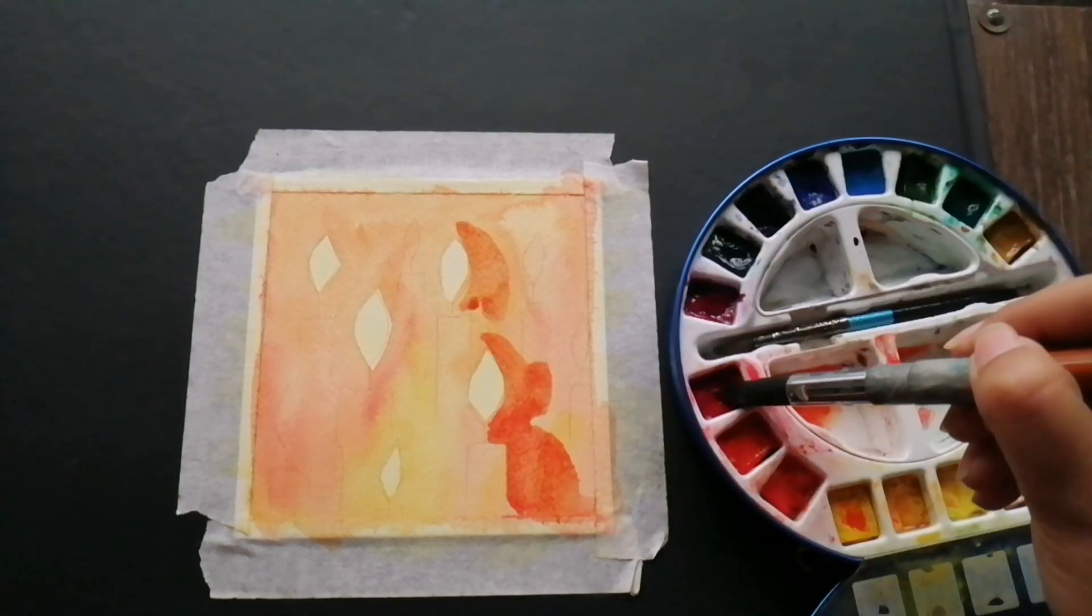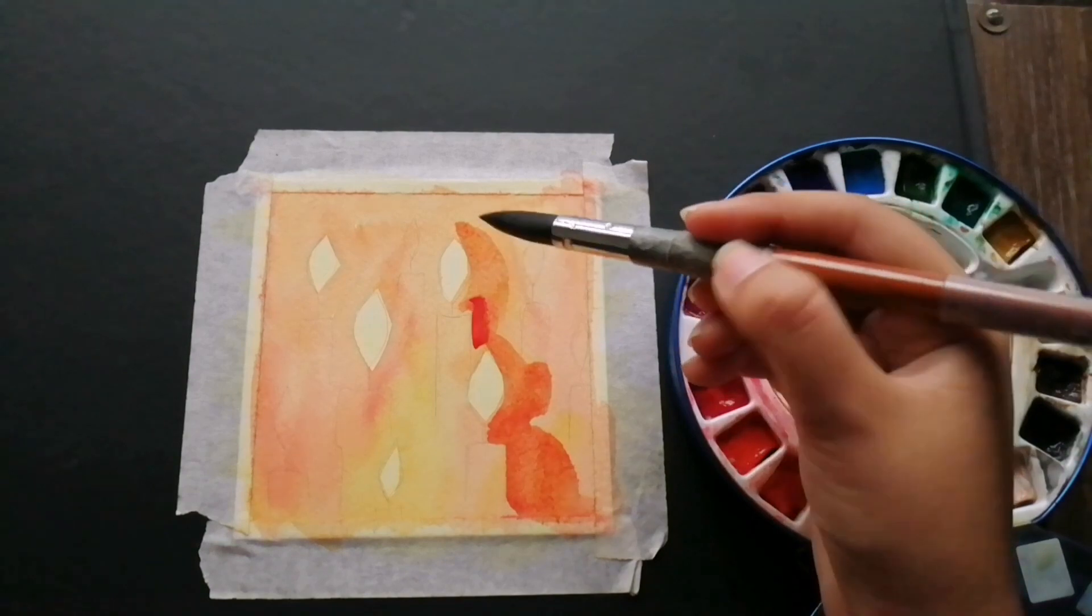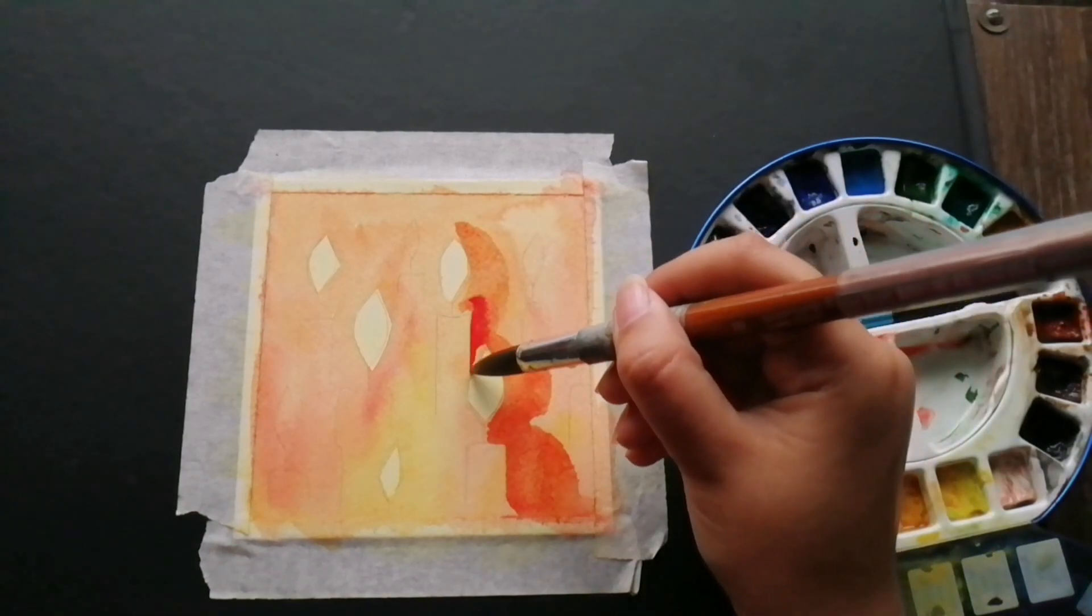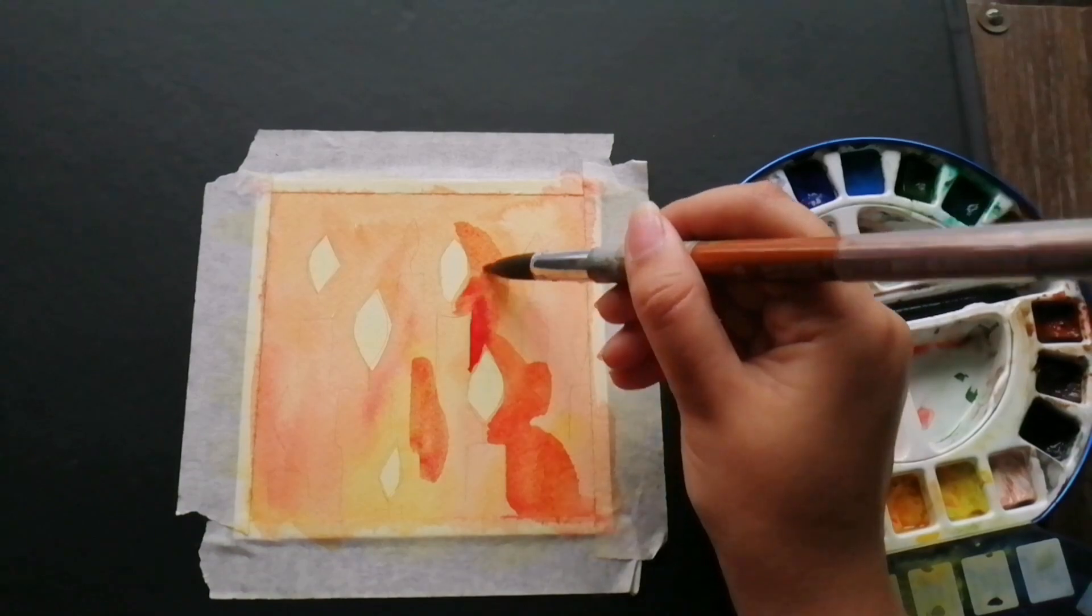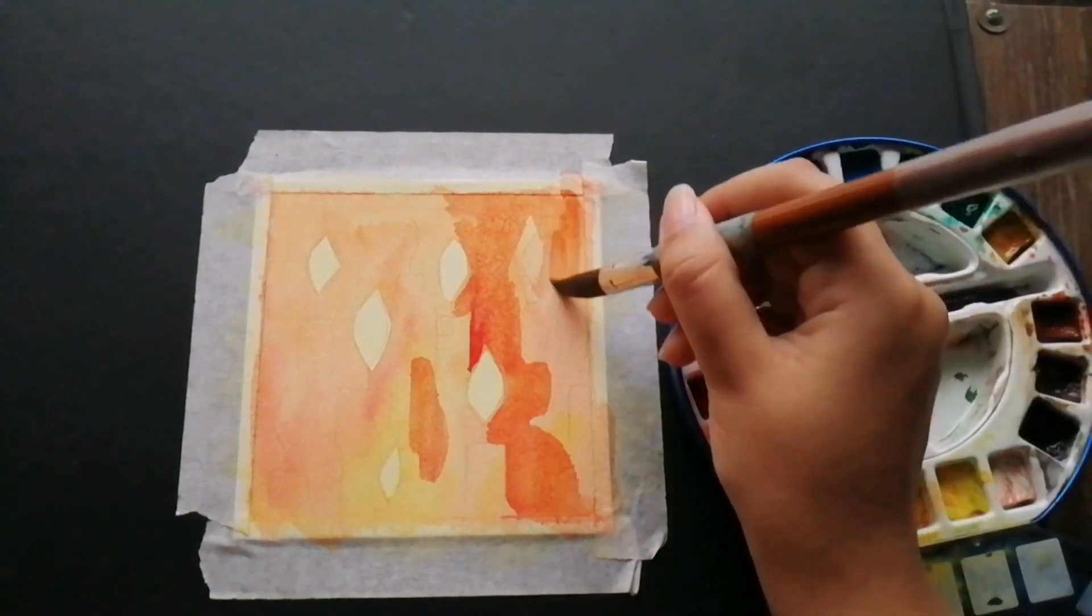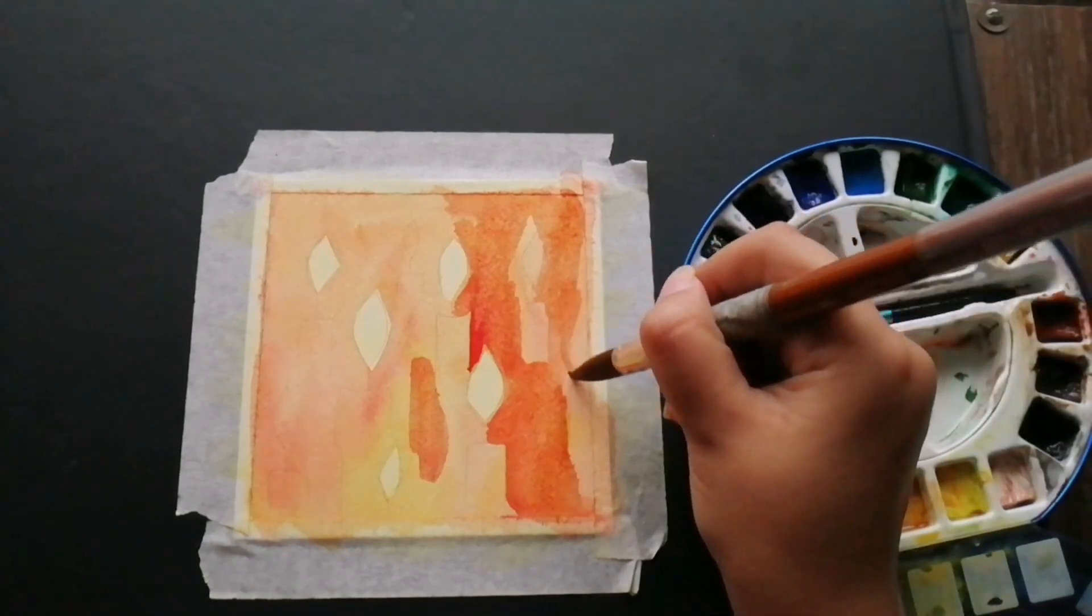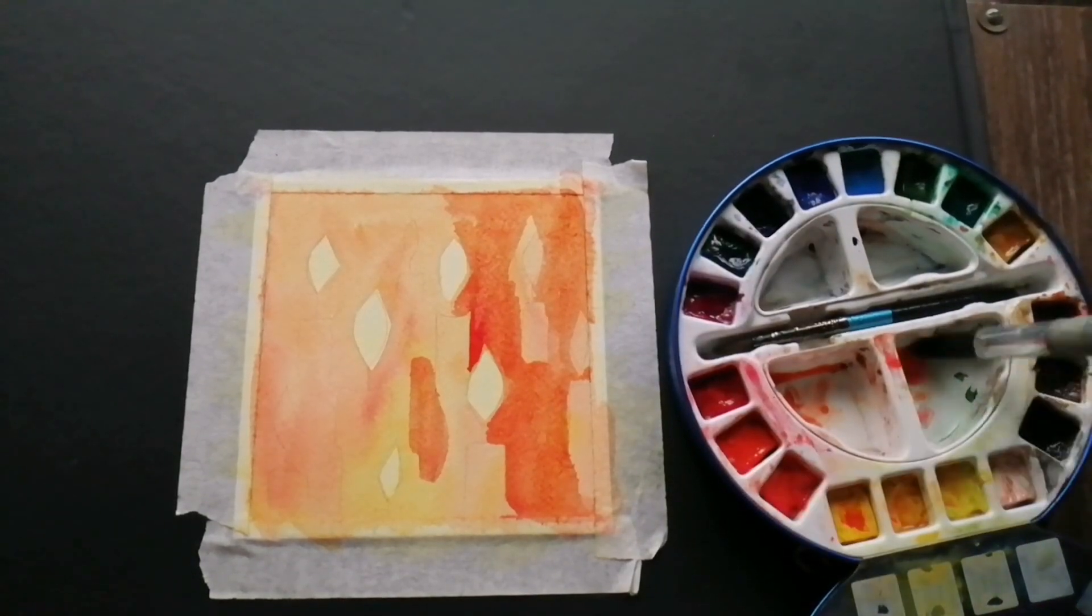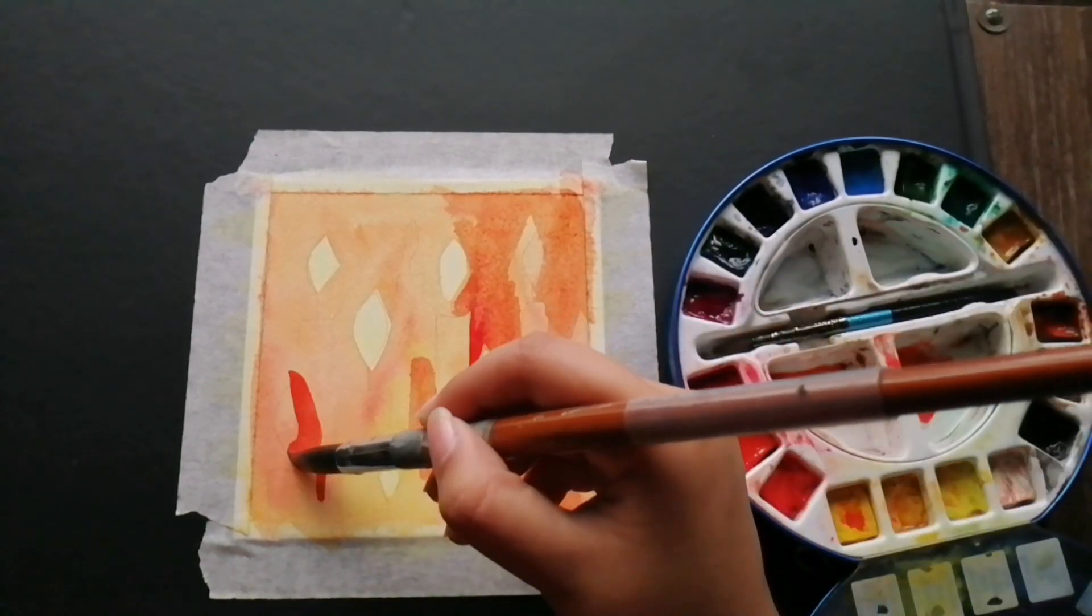To make the colors appear really saturated, watercolors require working in layers, so it's certainly something that requires a lot of patience. Since I'm not a very patient person, I did use my hair dryer to speed up the process here and there, and I'm not gonna lie, it worked wonders and saved me so much time.